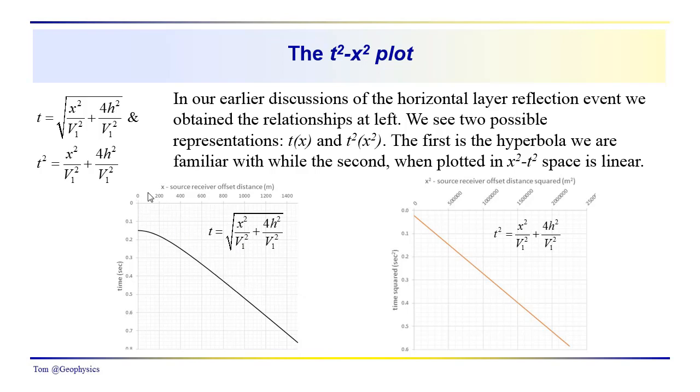Here we're assuming that we don't have a direct arrival, or a very clear one at least. What we want to talk about is a T squared X squared coordinate representation of the time distance relationship.